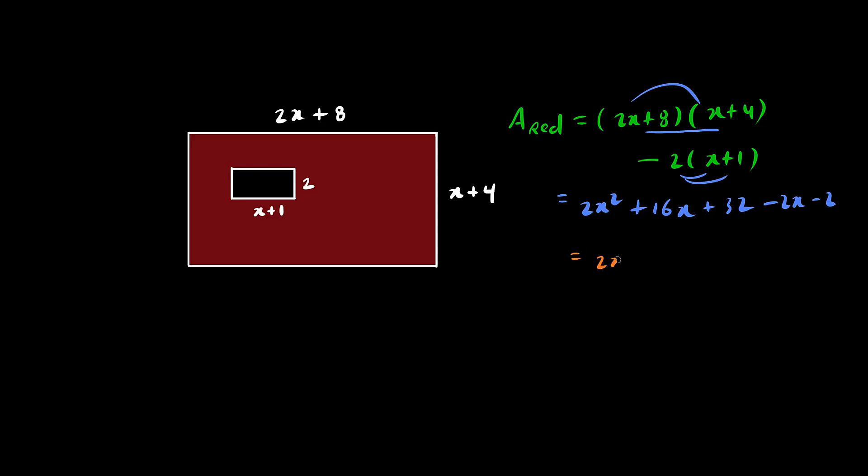Gathering like terms, we have 16x minus 2x is plus 14x, and 32 minus 2 is plus 30.